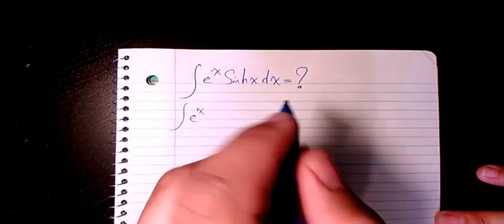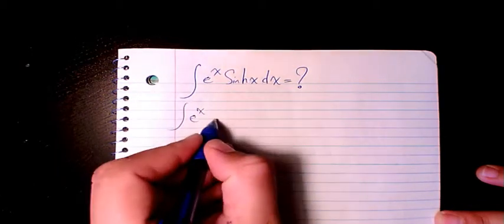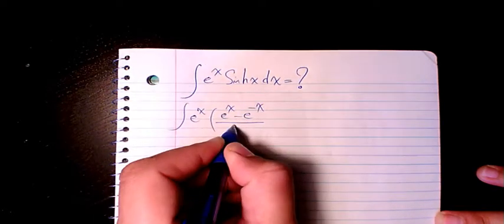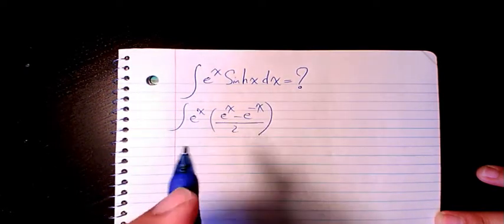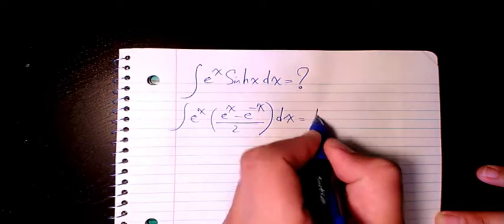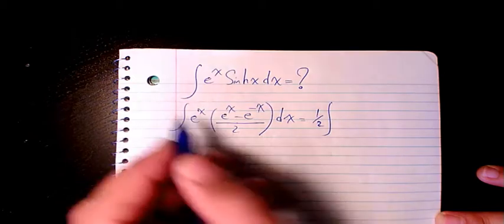I just convert sine hx to e to the power of x minus e to the power of negative x divided by 2. That's how we define sine hx. Then I keep this 1 over 2 outside the integration...